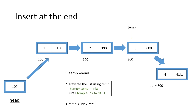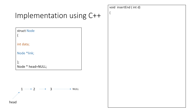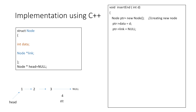We have successfully inserted an element at the end of our linked list. Now let's implement this using C++. This is the basic structure of our node. We start our function which takes an argument d, the value to be copied in the data part of the new node. We create a new node using the new operator and return its starting address to the pointer ptr. We copy the value d into the data part, which is 4 in our case. Next we put null in the link part of our newly created node.